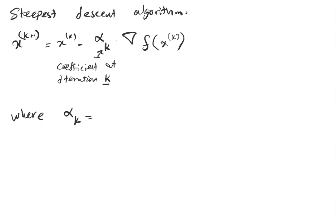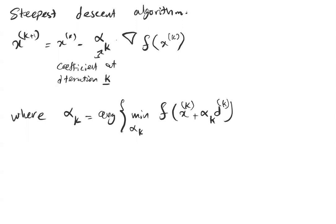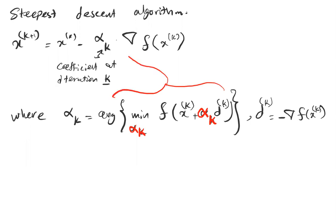So how do we find alpha_k? Alpha_k is the value that minimizes f of x_k plus alpha_k times d_k, where x_k is already known and alpha_k is the unknown. Here, d_k is the value of the gradient of f evaluated at iteration k, so alpha_k is your only variable in this optimization problem. Solving it gives you the coefficient for the steepest descent update rule.